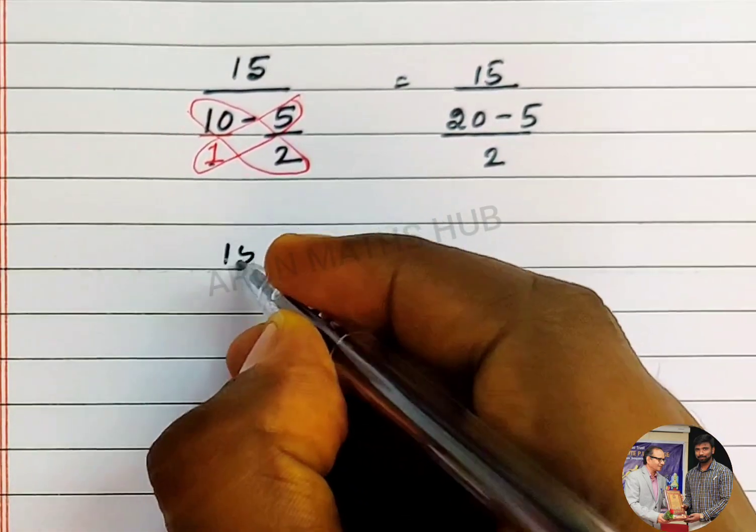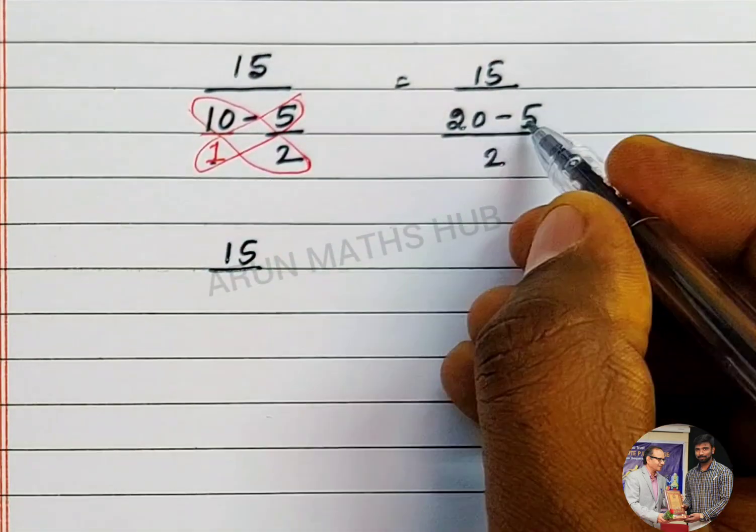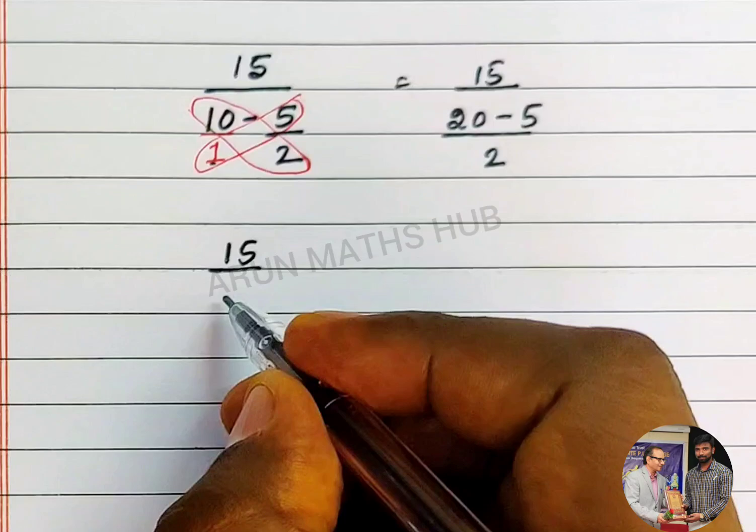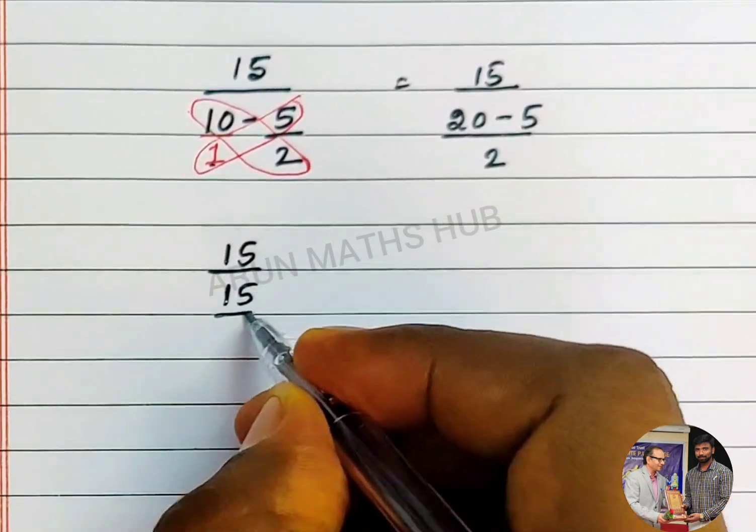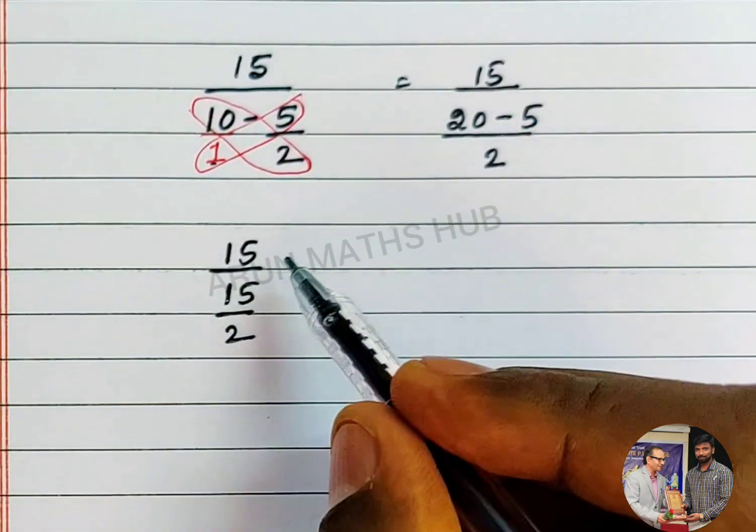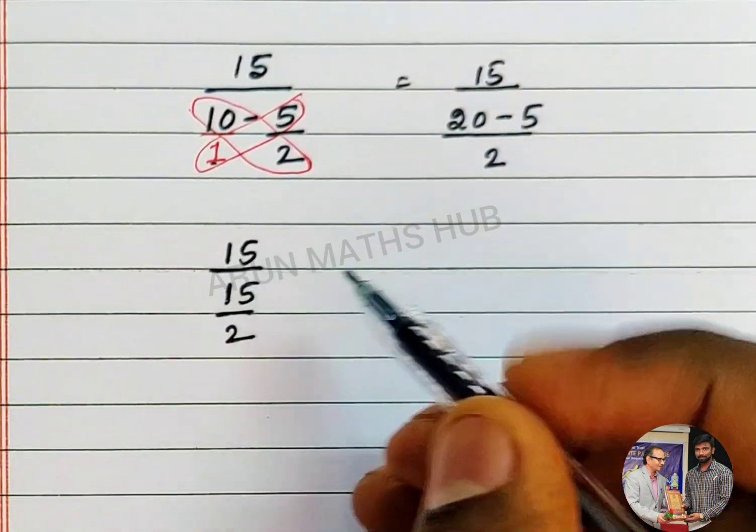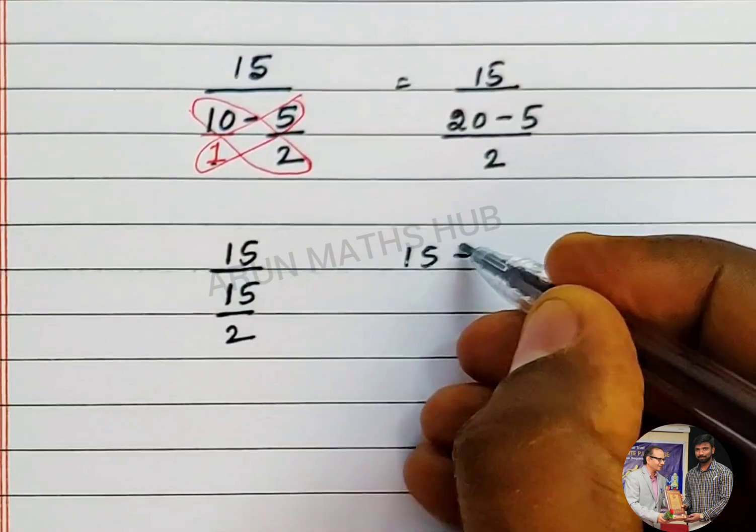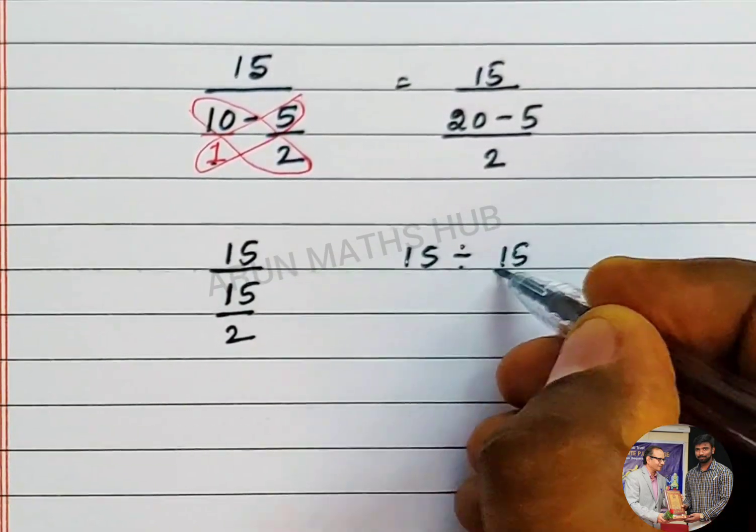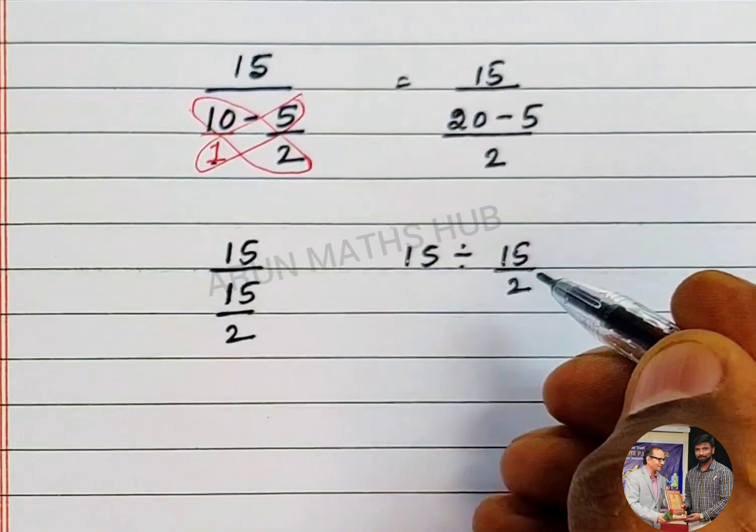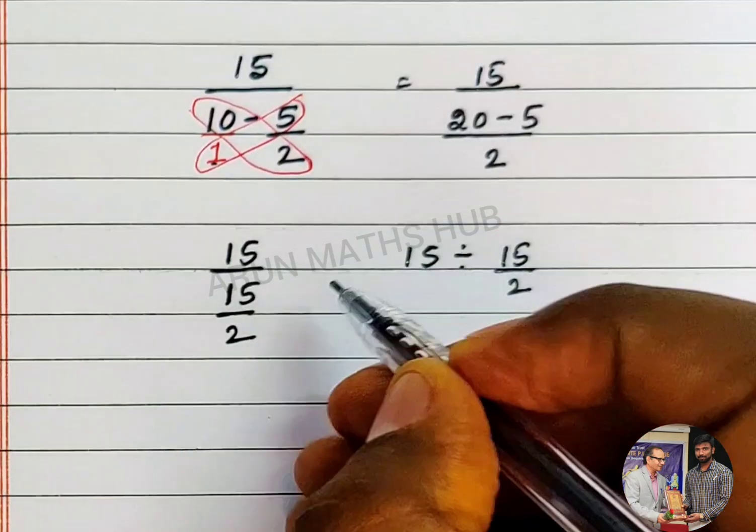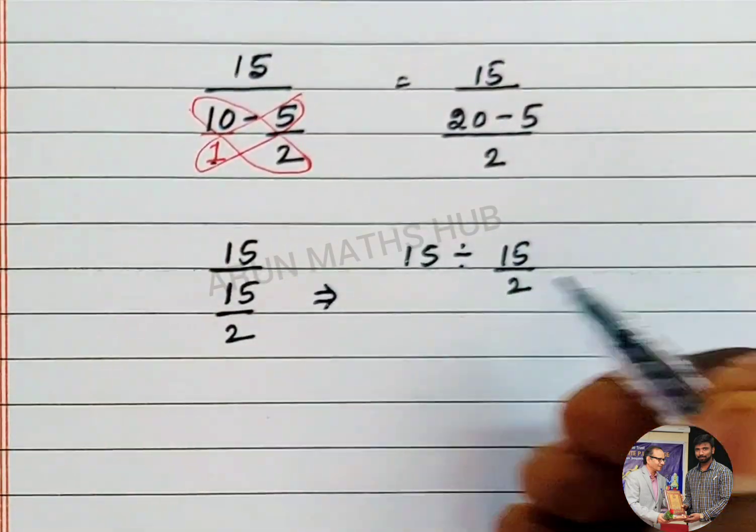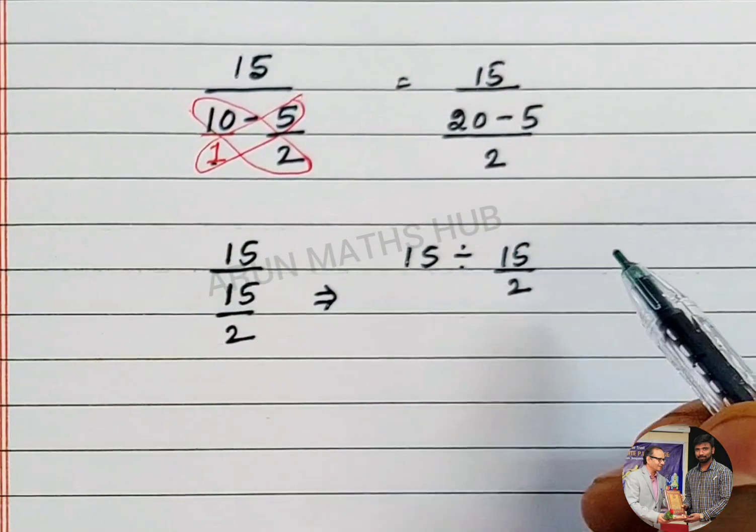Now, 15 divided by 20 minus 5 is 15 divided by 2. Now, it is 15 divided by 15 by 2. Now, I will write it as 15 divided by 15 by 2. I am following all the steps so that you can understand in a better way. 15 divided by 15 by 2.